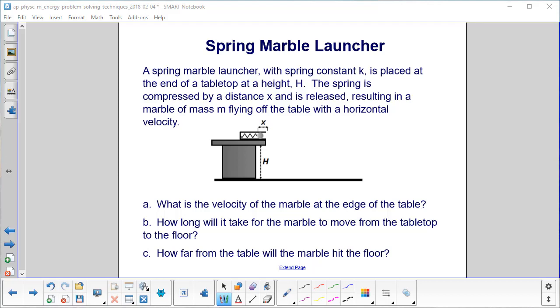A spring marble launcher is placed at the end of a tabletop with height h. The spring is compressed by a distance x and is released, resulting in a marble of mass m flying off the table with a horizontal velocity.